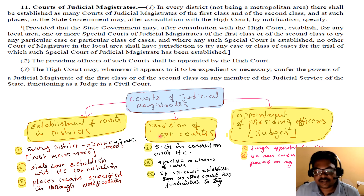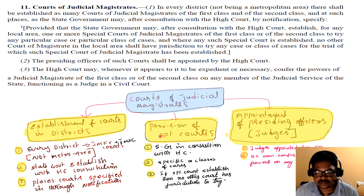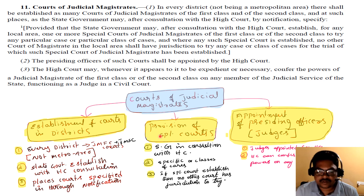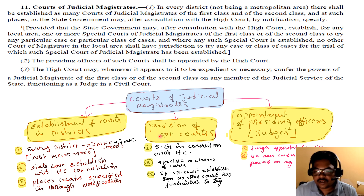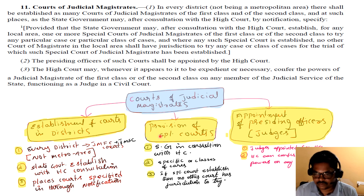Special courts are also established by the state government in consultation with the High Court. Special courts do not try normal cases — they try specific cases. For example, if there is fraud regarding taxation, it will go to a special court. If a case falls under the jurisdiction of a special court, the JMFC and JMSC — judicial magistrates of first and second class — are not supposed to try those cases. Only the special court having jurisdiction can take and deal with the case.